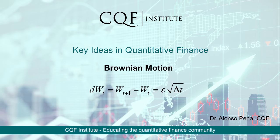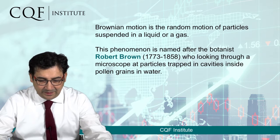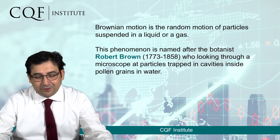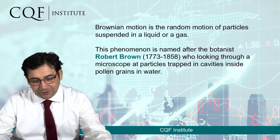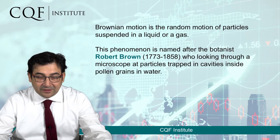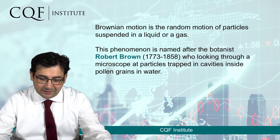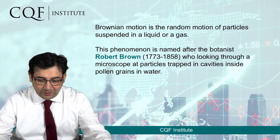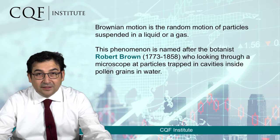Key ideas in quantitative finance: Brownian motion. Brownian motion is a random motion of particles suspended in a liquid or a gas. This phenomenon is named after the botanist Robert Brown, who looked through a microscope at particles trapped in cavities inside pollen grains in water.